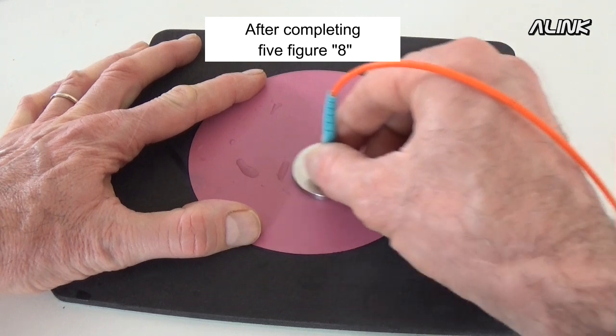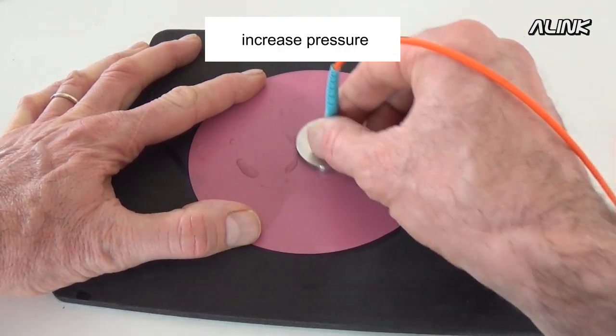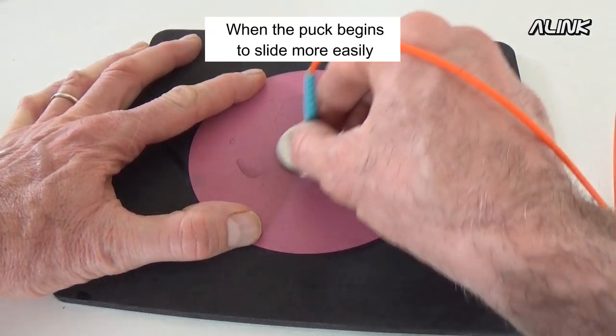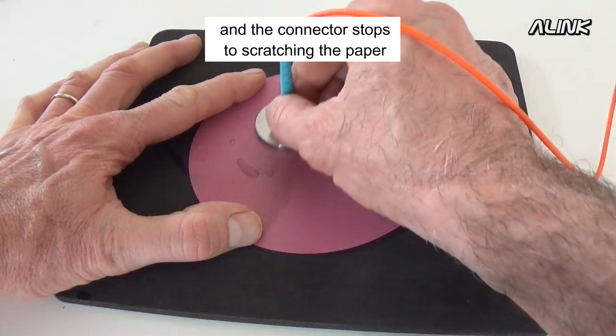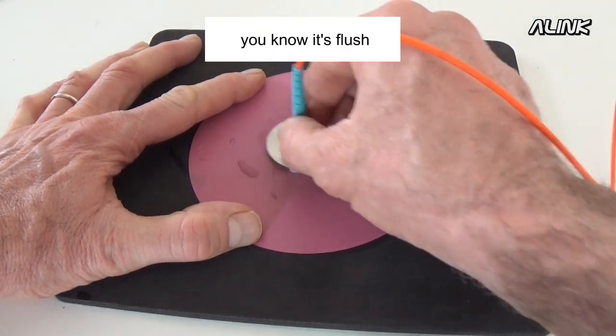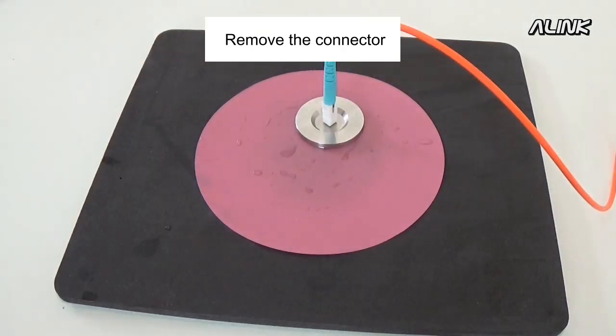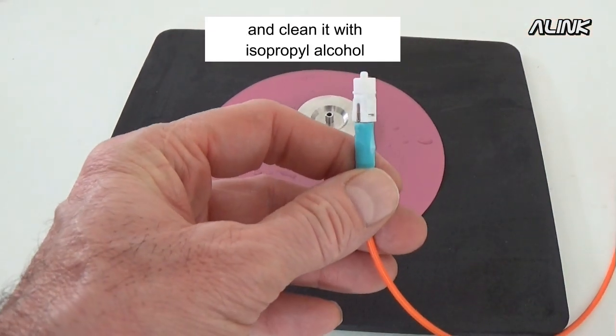After completing 5 figure-8s, increase pressure. When the puck begins to slide more easily and the connector stops scratching the paper, you know it's flush. Remove the connector and clean it with isopropyl alcohol.